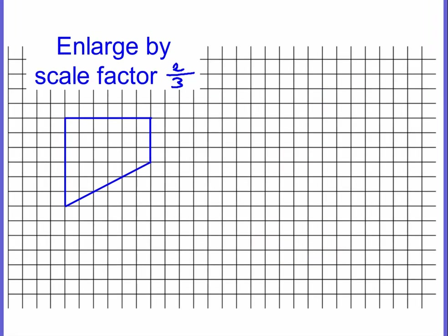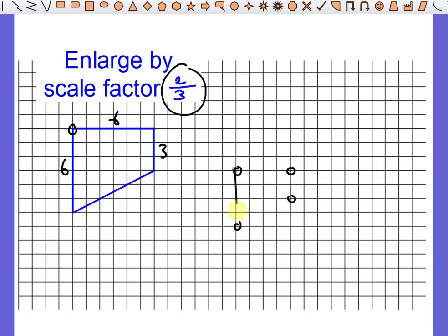The last example uses a non-unitary fraction — like two thirds. This isn't difficult: this side is six and this side is three. Two thirds of six: one third is two, so two thirds is four — go four down. From another point, one third of three is one, so two thirds is two. Join them all up and there we have it — a scale factor of two thirds.